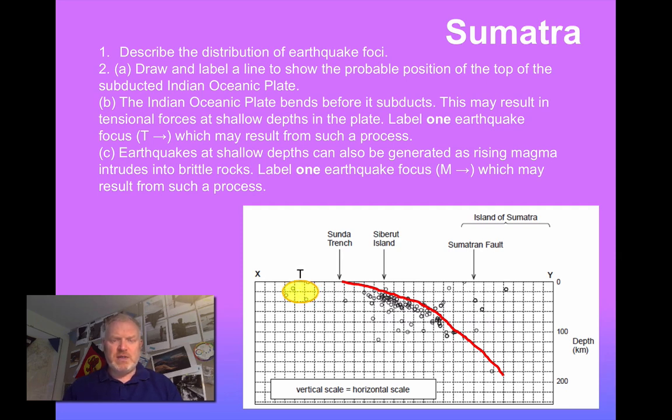These earthquakes here to the west of the Sunder Trench, these are the tensional earthquakes. This is where the plate's starting to be deformed as it bends to be pushed down the subduction surface. The earthquakes here under Sumatra, that's where the magma is. Remember, the magma will only start being generated once the plate goes 80 to 100 kilometres below the surface. So it's the earthquakes above that that are going to be magmatic.